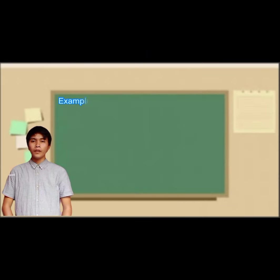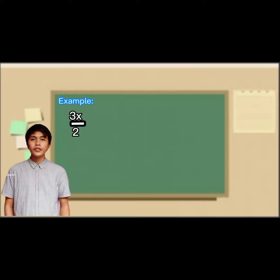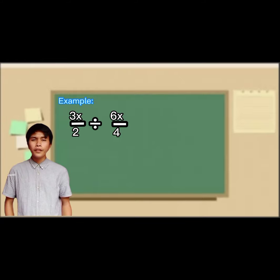So, let's have an example. Our given is 3x over 2 divided by 6x over 4. Our first step is to invert the second fraction.